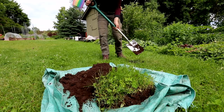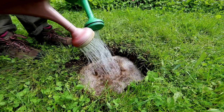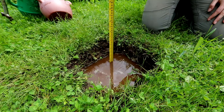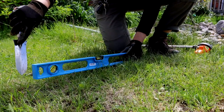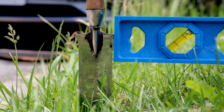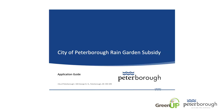Once you have reviewed the materials, you will need to complete a drainage or infiltration test, measure the slope of your proposed garden area, and design the garden using the design sketch template. The application guide provides more information about each of these steps.